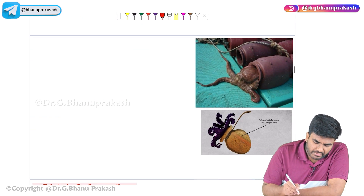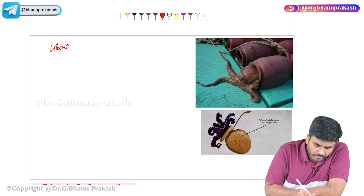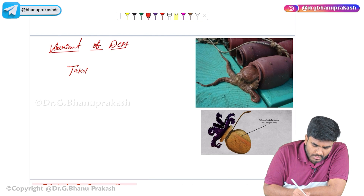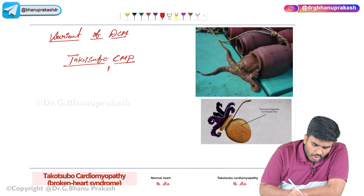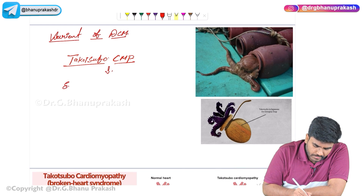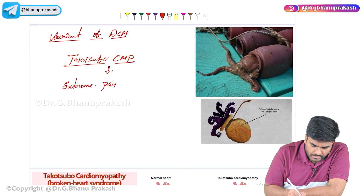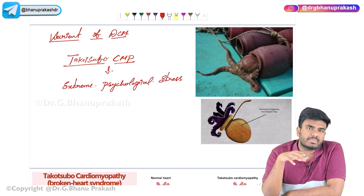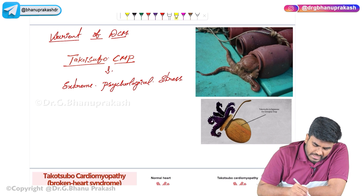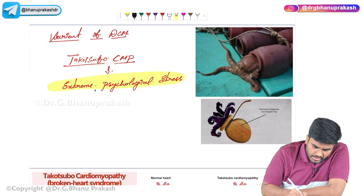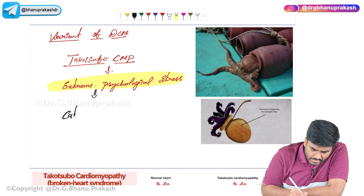Now let's discuss a special variant of dilated cardiomyopathy called Takotsubo cardiomyopathy. In this condition, when a person is under extreme psychological stress — for example, a mother who lost her child or a father who lost his daughter in a road accident — this extreme stress activates the sympathetic nervous system, leading to excessive release of catecholamines.